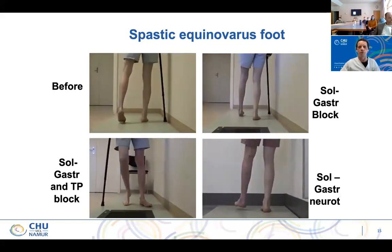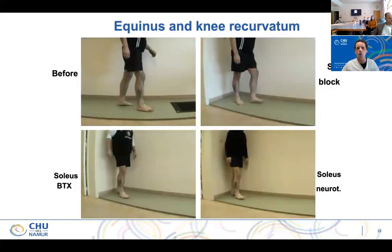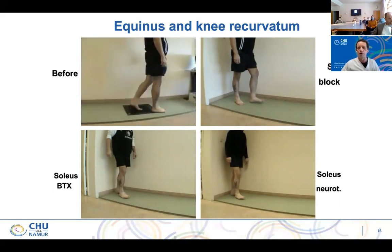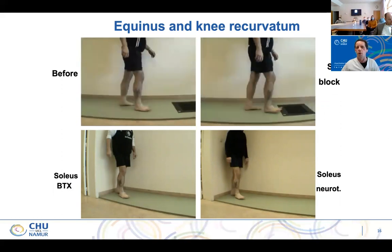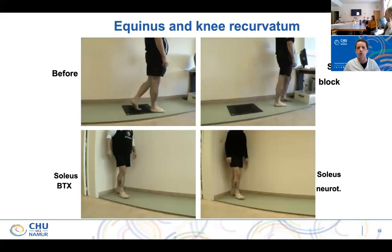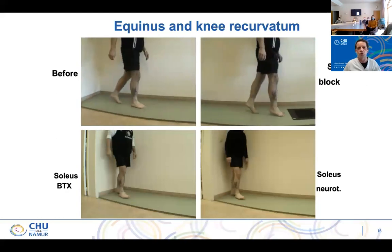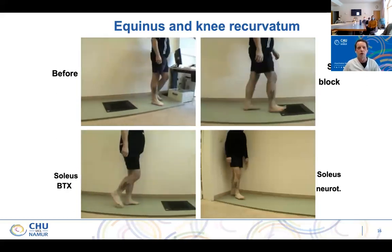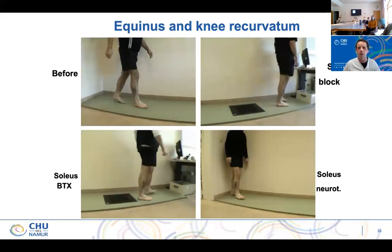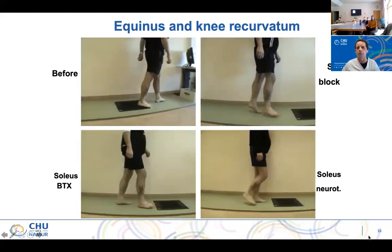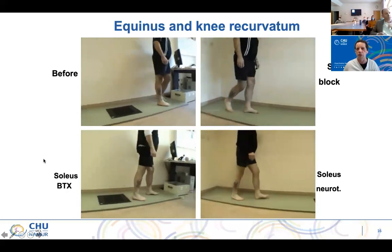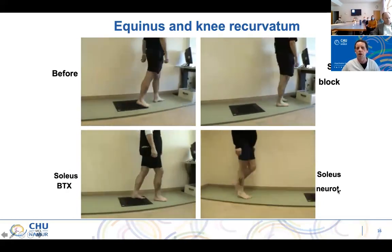A more classical case: you can see a clear knee recurvatum in the stance phase of gait. After the nerve block, you have no more knee recurvatum, which means that the soleus is the key muscle. Philippe Deck published this in the Lancet some years ago. I inject the patient first, and you can see he's able to walk on his foot. After, I inject with toxin so that the patient is able to see what is the improvement in his daily activity. And finally, we perform a neurotomy. That's usually our strategy: the block to understand, toxin to assess during some months so the patient can test it at home, and finally, neurotomy.